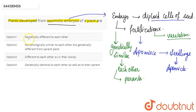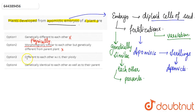Looking at the options: option 1 says they are genetically different to each other — this is wrong. Option 2 says they are morphologically similar but genetically different from parents — this is also wrong, because they are not genetically different. Option 3 says they are different with respect to their ploidy, meaning different chromosome numbers — this is also wrong.